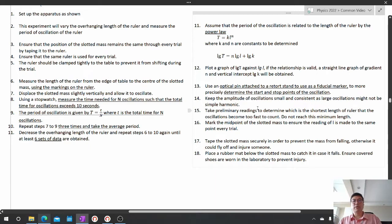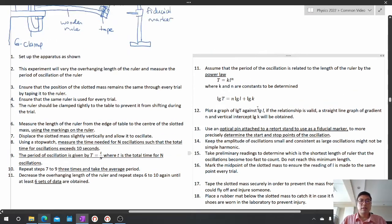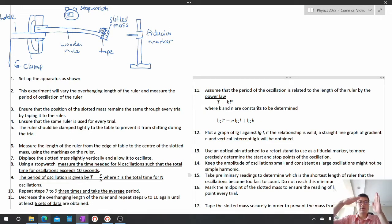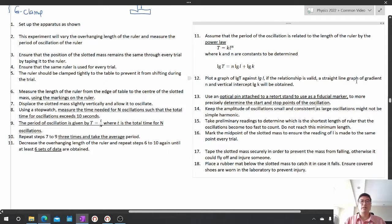Let's write something about preliminary readings. If you play this experiment in your mind, you know that when the ruler gets shorter and shorter, the oscillations are going to get faster and faster until it gets so short that the oscillations are way too fast to measure. So we'll take preliminary readings to determine the shortest length of the ruler at which the oscillations become too fast to count and make sure that we do not reach this minimum length.